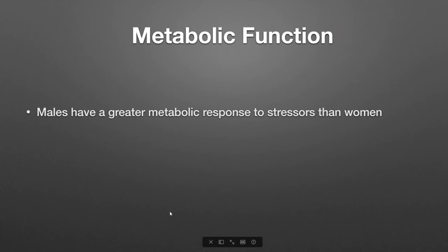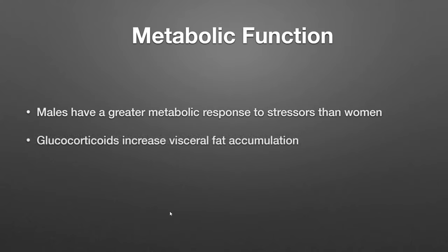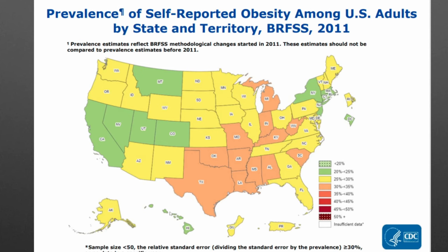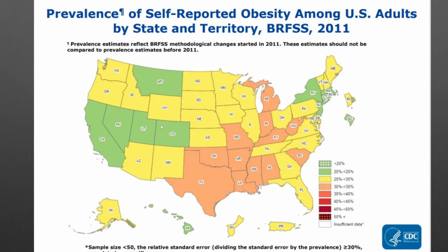In males, if you have a lot of stress, instead of going down the anxiety depression route, you're probably going to eat a little bit more and have other issues. Your glucocorticoids are going to increase the amount of fat you have, which increases the risk of all this stuff. Obesity is a really big problem in the United States. I've been tracking this CDC map since I was in residency — back in 2011, anywhere from 20 to 25% of the population had obesity in the greener states.